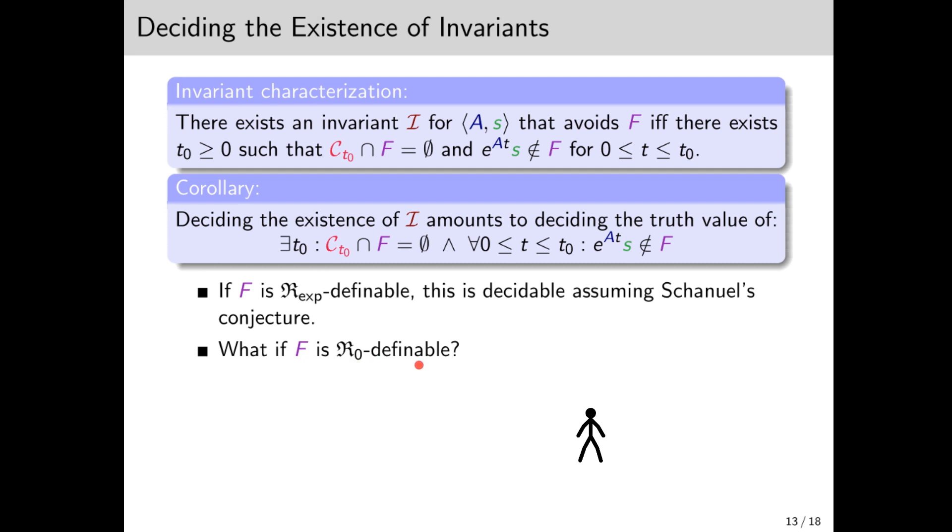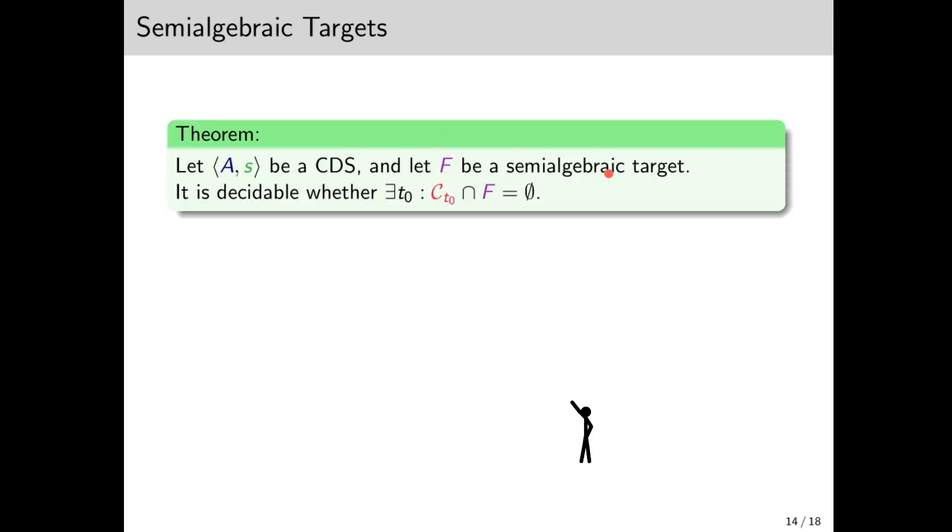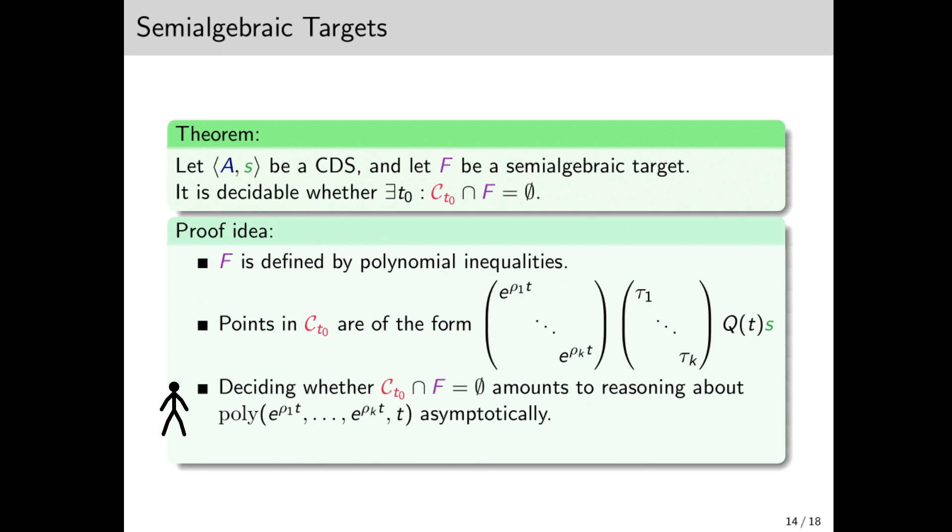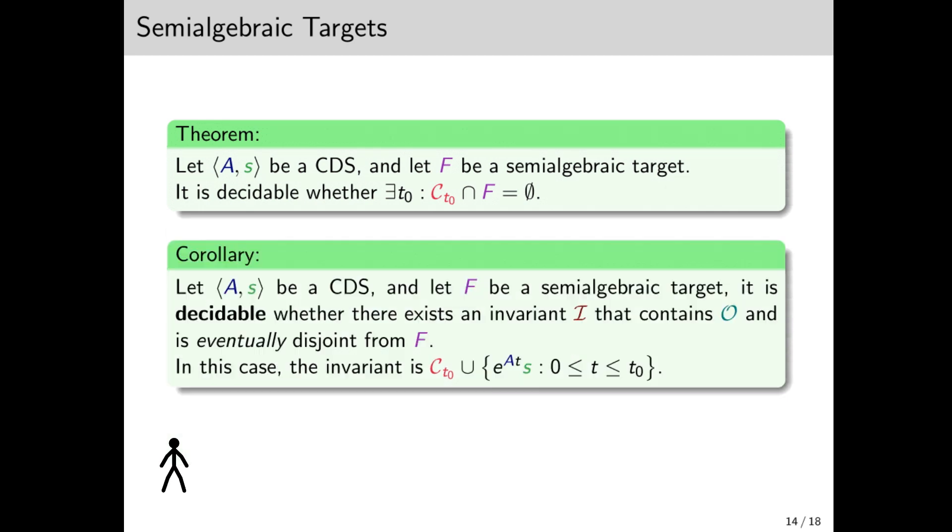Okay, well, what about when F is semi-algebraic? Then it's not really fair to rely on Schanuel, since R₀ is decidable unconditionally. It turns out that in this case, it is decidable, unconditionally, whether there exists t₀ such that C_{t₀} is disjoint from F. The idea is that F is defined by polynomial inequalities, and points on C_{t₀} have this specific structure. So when we plug these points in the description of F, we ultimately need to reason about the asymptotics of polyexponential expressions. Since the exponents are algebraic, this is not too difficult. For comparison, in the discrete setting, the analogous result is much harder, since the exponents are not algebraic.